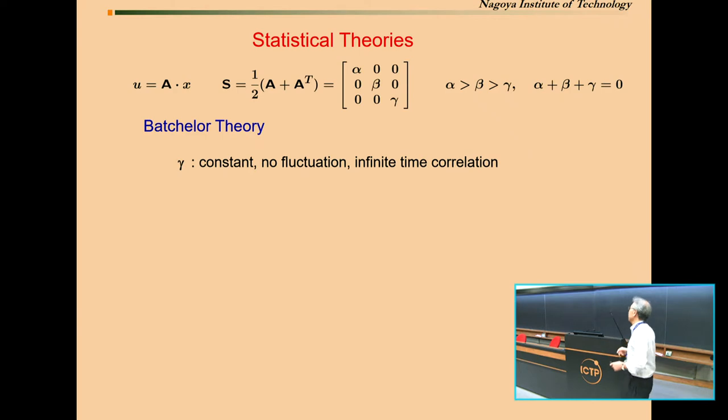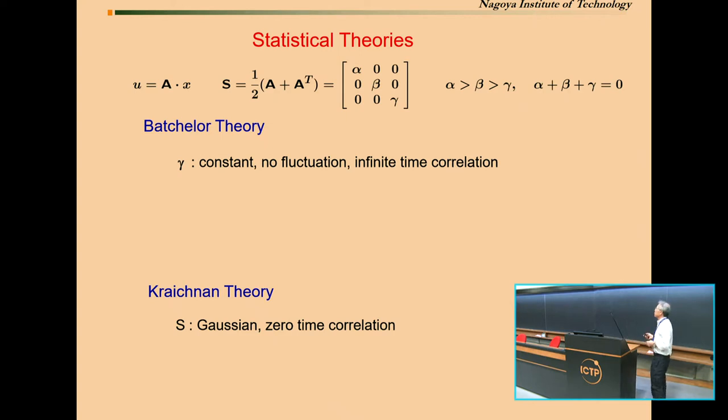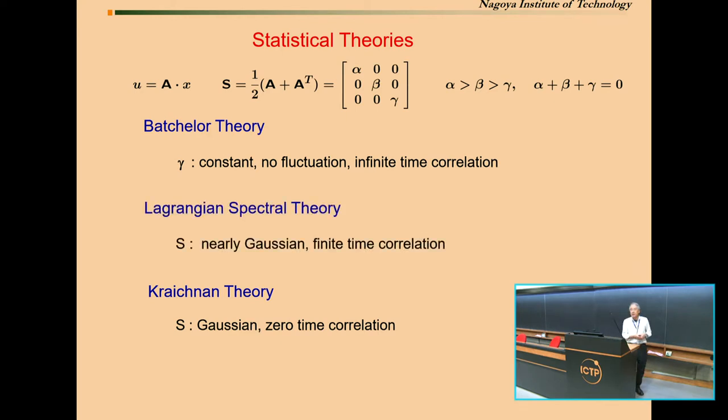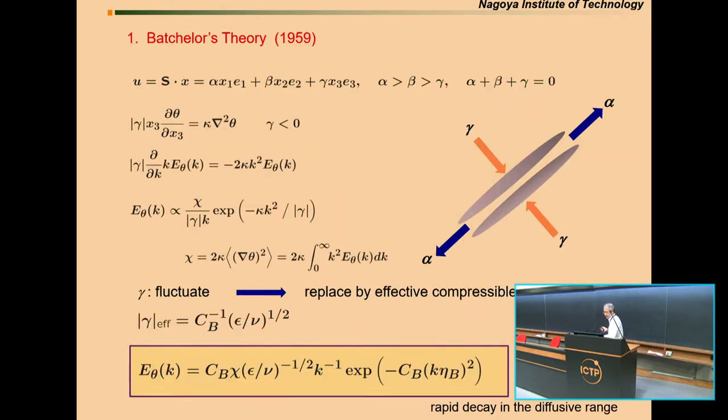I discuss three theories. One is Batchelor's theory. In his theory, the gamma is the most negative eigenvector of rate of strain tensor. The gamma is assumed to be constant, or no fluctuation, but it has infinite time correlation. In the opposite case, the Kraichnan theory, a famous theory for passive scalar. He assumes that the rate of strain tensor obeys Gaussian statistics and zero-time correlation. In between them, there is Lagrangian spectral theory. This is a spectral theory based on some mathematical procedure. It assumes nearly Gaussian statistics for rate of strain tensor, and it has finite correlation time.